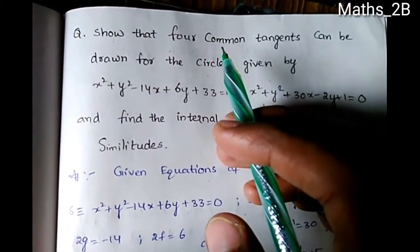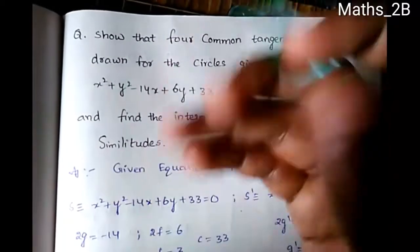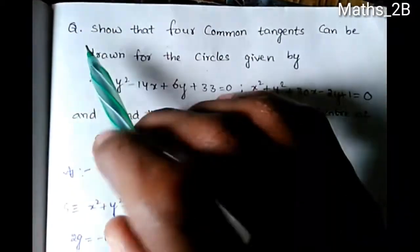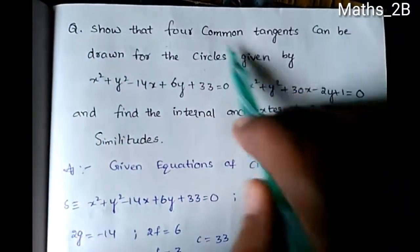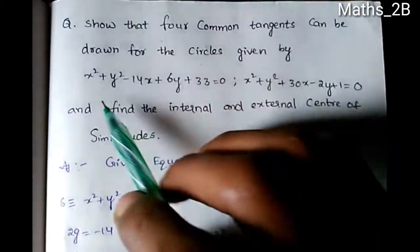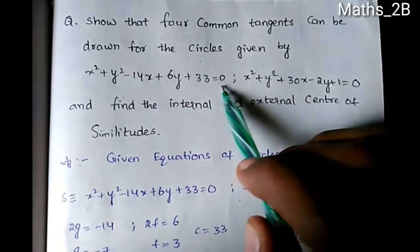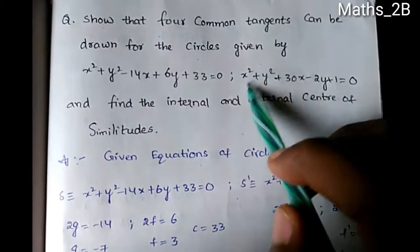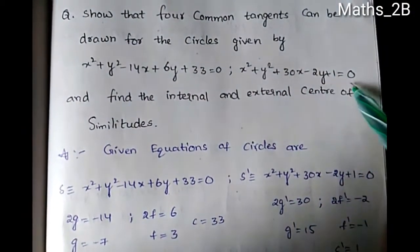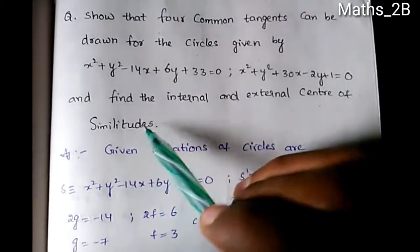Hi friends! Hello everyone! Welcome to this tutorial. We are going to see the following question: show that four common tangents can be drawn for the circles given by x² + y² - 14x + 6y + 33 = 0 and x² + y² + 30x - 2y + 1 = 0, and find the internal and external centers of similitude.